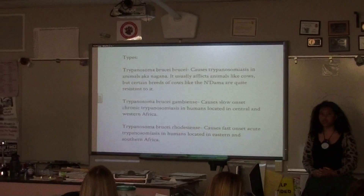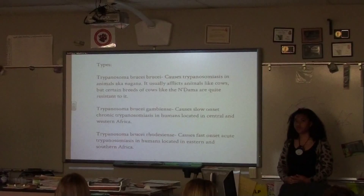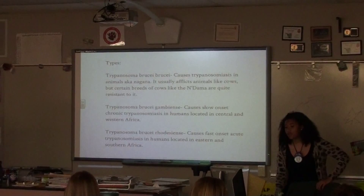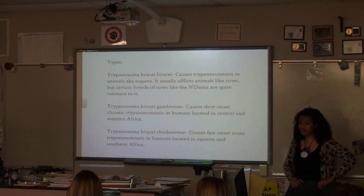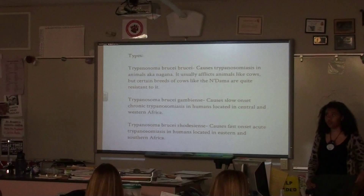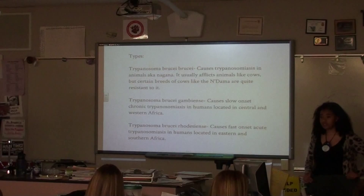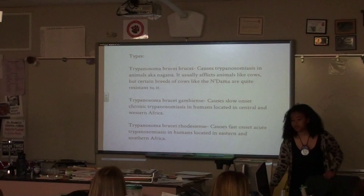So it's not as harmful to get it, but it's probably a little bit more difficult to detect the symptoms and get quick treatment. And then there's Trypanosoma brucei rhodesiense, and that causes fast onset trypanosomiasis. This is a rarer kind in humans, because its main reservoir is in animals, kind of like Trypanosoma brucei brucei. But it can harm humans.